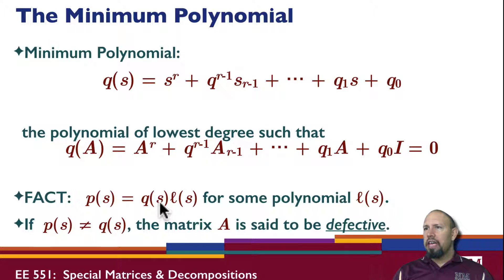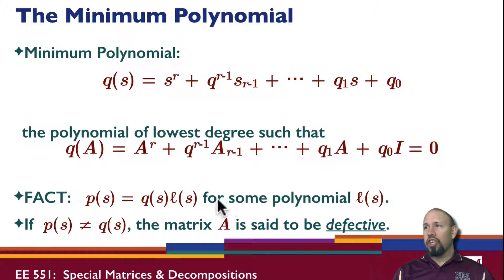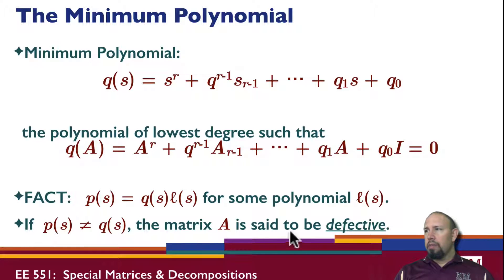If P of S is not equal to Q of S — that is, if there is a polynomial L of S that is not just the constant value 1 — then the matrix A is said to be defective.